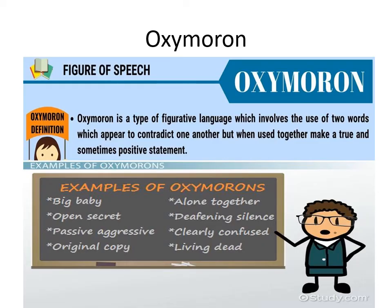Oxymoron resembles antithesis but is distinct. An oxymoron involves the use of two contradictory words placed very close together, giving rise to a different kind of statement. Examples: 'big baby' — a mature person behaving like a baby; 'open secret' — everyone knows it but it is called a secret; 'original copy'; 'alone together'; 'deafening silence'; 'clearly confused'; 'living dead.' Two opposite senses are placed together to create a completely different meaning.